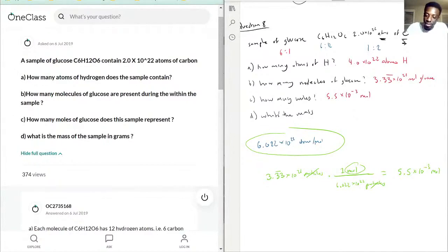And here, just to avoid confusion, instead of molecules I'm going to say particles. That way we know we don't say mole and mole and get confused. So we have 4.0×10^22 atoms, 3.3 repeated times 10^21 particles, and 5.5×10^-3 moles.